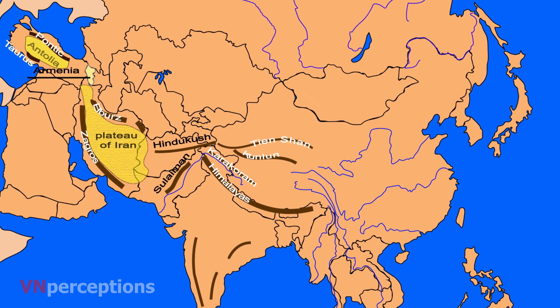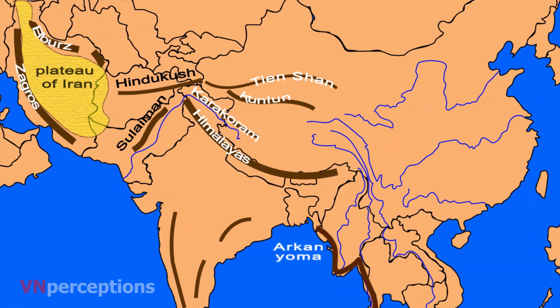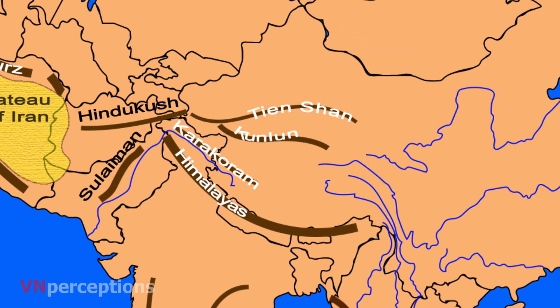Further east, the Himalayas bend southward and continue as the Arakan Yoma in Myanmar. The Karakoram range lies to the north of the Himalayas, and is also known for Godwin Austen, the second highest peak in the world. The Kunlun Mountains run eastward from the Pamir Knot and extend into China. The Altyn Tagh runs in the northeast direction and continues into China.